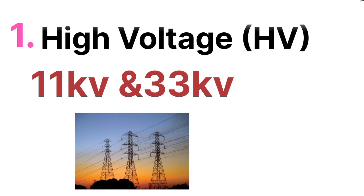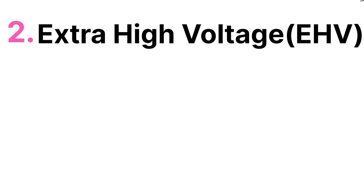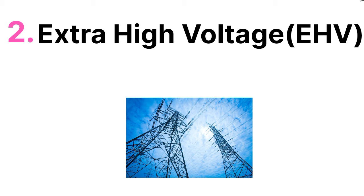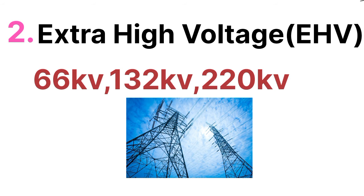The next one is the extra high voltage transmission line, that is EHV transmission line. This type of transmission line generally has voltage levels of 66 KV, 132 KV, and 220 KV. These are the categories of extra high voltage transmission line.